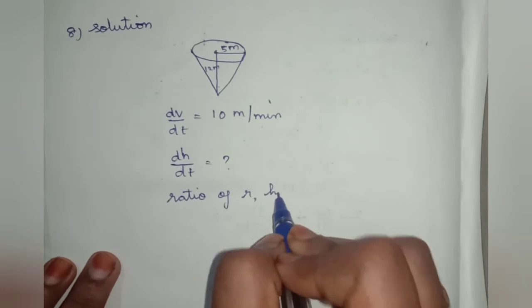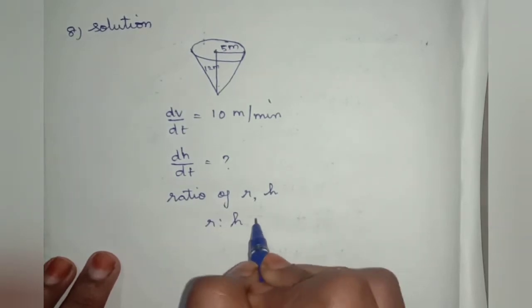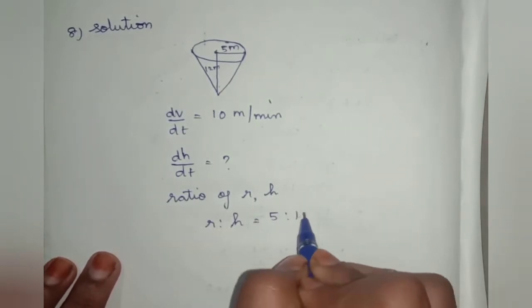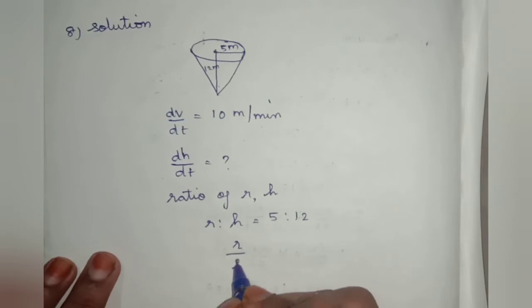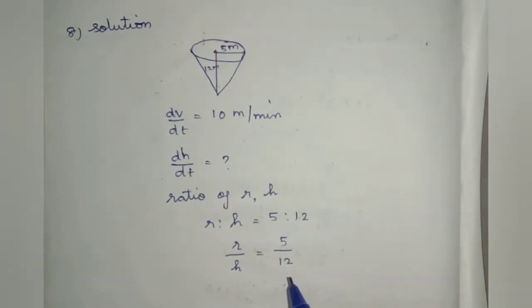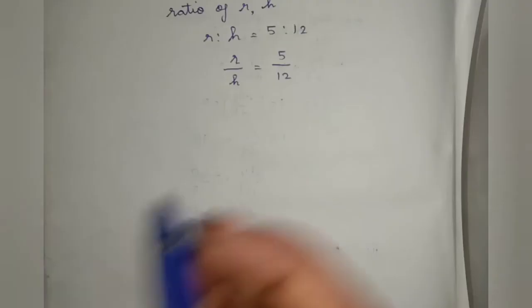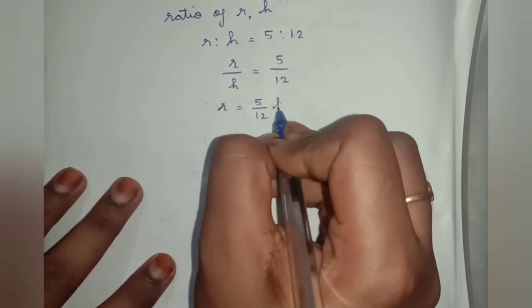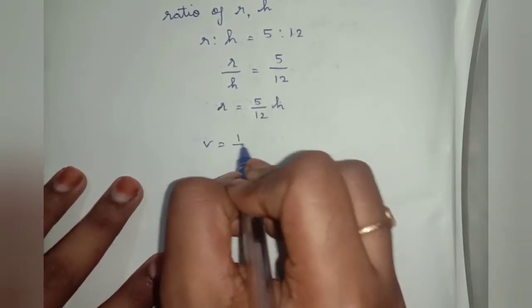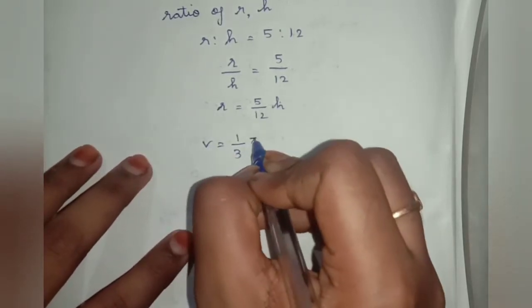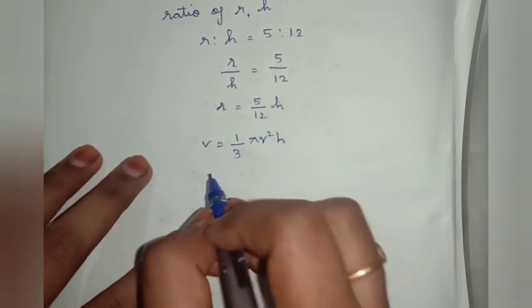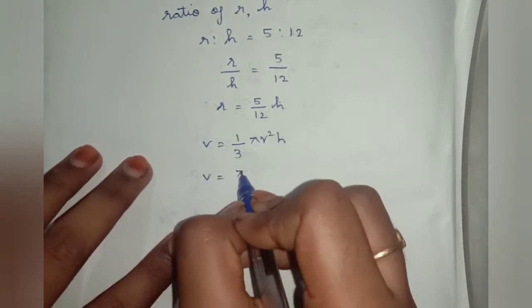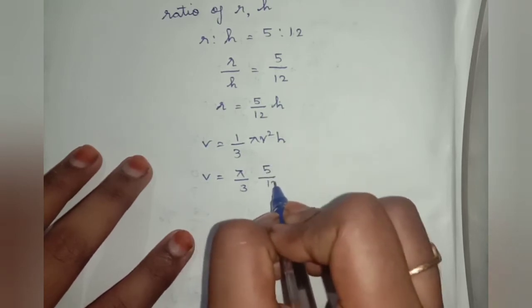The ratio of r to h is 5 to 12, so r equals 5h divided by 12. The volume V equals π over 3 times r squared times h.